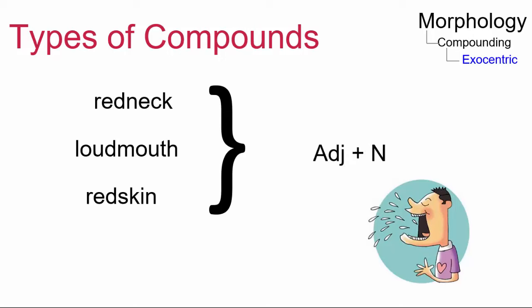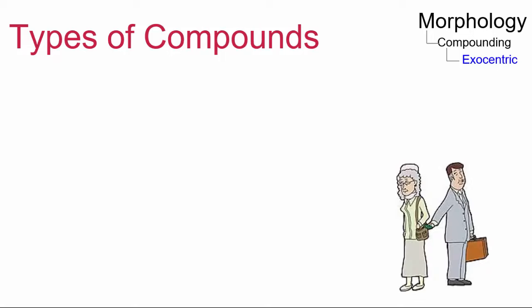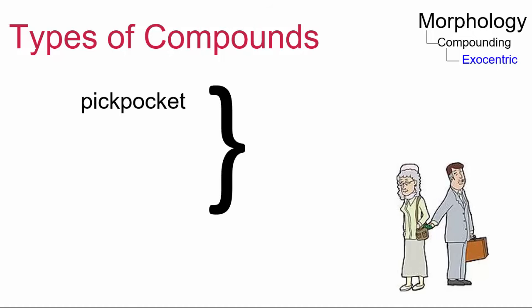These compounds consist of an adjectival modifier and a noun head. Another type of exocentric compound consists of a verb modifier and a noun head — for example, pickpocket, cutthroat, killjoy. These compounds are rare and the pattern is unproductive.